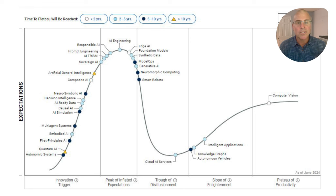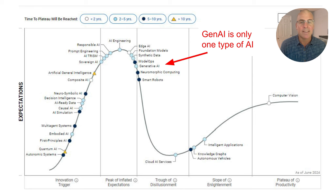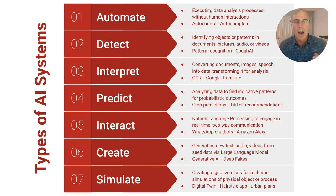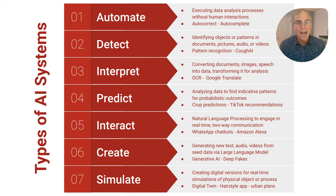If you look here at Gartner's hype cycle for AI in 2024, you can see the many different types of AI, and not just ChatGPT, a form of generative AI. Many things that we think of as just normal computer technology is really AI, because AI is so common these days. I've categorized AI into seven different types — there are as many ways to categorize AI as there are types of AI.